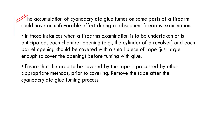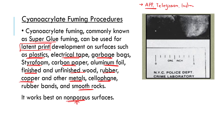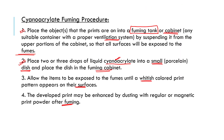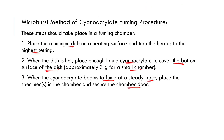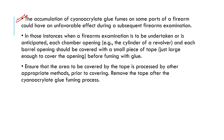Next class we will cover the ninhydrin method. In today's class we have seen cyanoacrylate fuming — the superglue fuming method — which can be used on many surfaces, producing a white-colored fingerprint development. It works best on non-porous surfaces and has two methods: the normal method and the microburst method. Keep in mind the firearm precautions when applying this method.